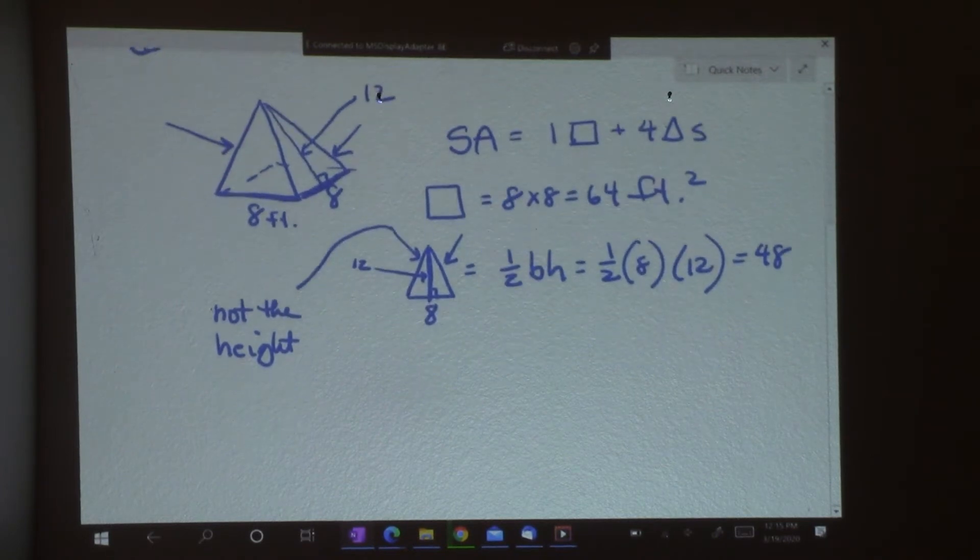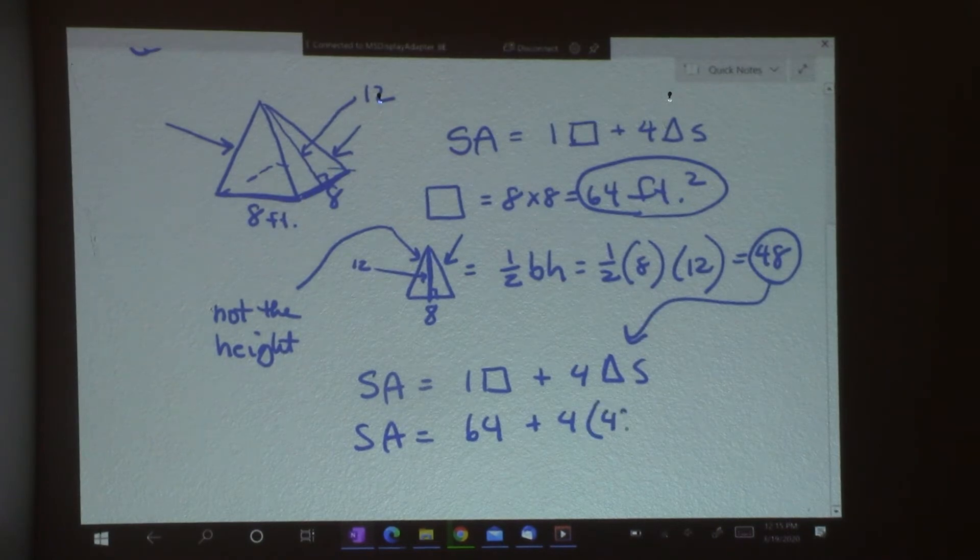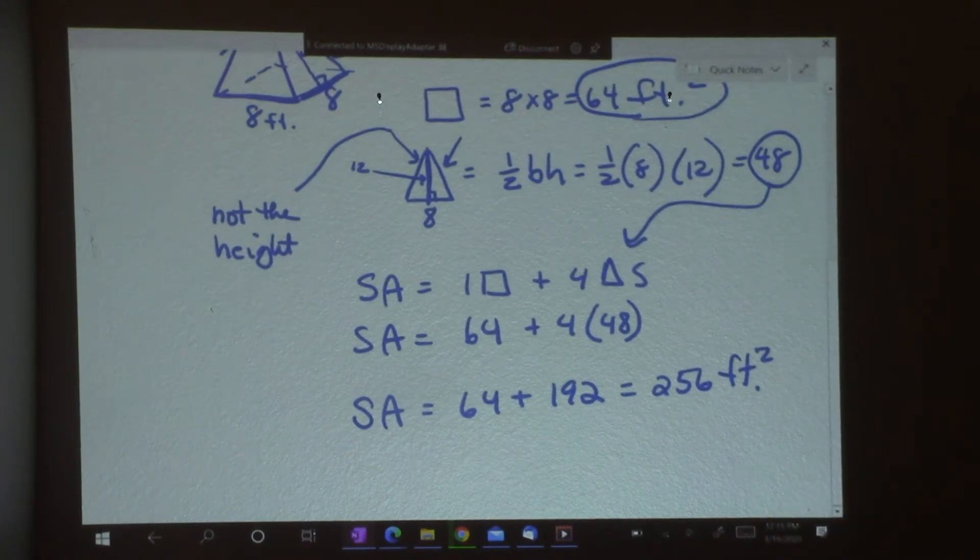So now I've got each piece. I've got my base and I have one triangle. So my surface area is going to be my one base. I'm going to rewrite this plus 4 triangles. And I've got 64 here plus 4. Now I'm going to put 4 triangles in there. 48. So I get 64 plus 4 times 48 is 192. And when I add those two together I get 256 feet squared. All right. So that's the surface area of a square base pyramid. That's number one.